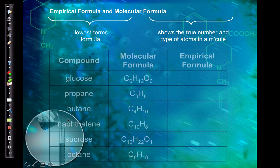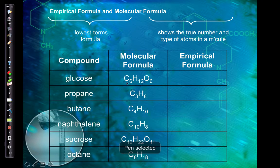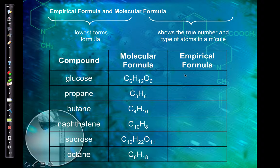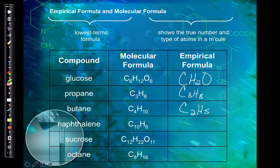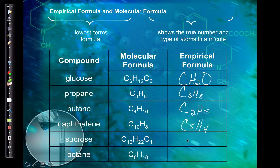Let's look at a few formulas and decide if they're empirical. Glucose C₆H₁₂O₆ — divide all by 6, giving a 1:2:1 ratio, so the empirical formula is CH₂O. C₃H₈ — can't divide by anything, so that is the empirical formula. C₄H₁₀ — both divisible by 2, so the empirical formula is C₂H₅. C₁₂H₂₂O₁₁ — can't simplify, so the empirical and molecular formulas are the same.